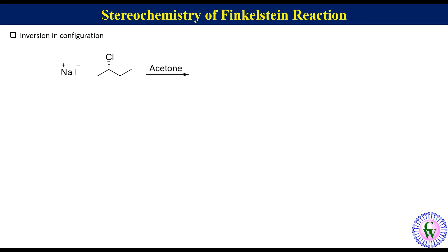In an SN2 attack, the iodide ion will attack from the back side — that is, from the top of the plane of the paper — and this will lead to the formation of R-2-iodobutane.